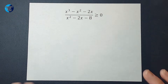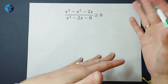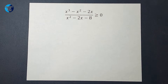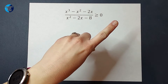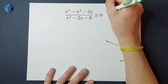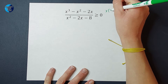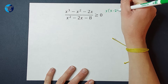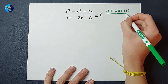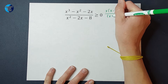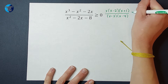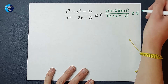When solving these, the first thing I want is everything on one side and zero on the other side. We're good. Next thing I'm going to do is factor. If you need a factoring review, I will link a video in the corner. It's going to factor to x times (x minus 2) times (x plus 1) on top, and on bottom it factors to (x plus 2) times (x minus 4), and we are still greater than or equal to 0.